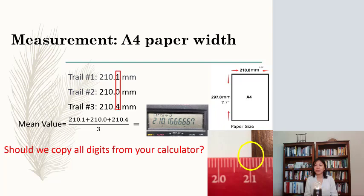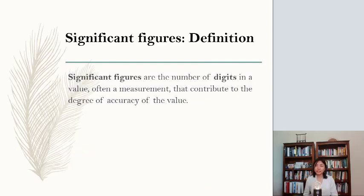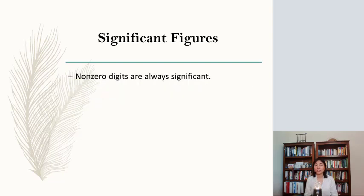That is the topic of significant figures. Significant figures are the number of digits in a value, often a measurement, that contribute to the degree of accuracy of the value. And it's a rule that all engineers and scientists should follow. Here is the rule of the number of significant figures. Non-zero digits are always significant.